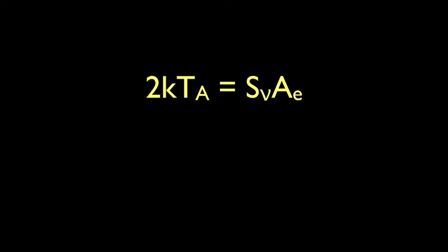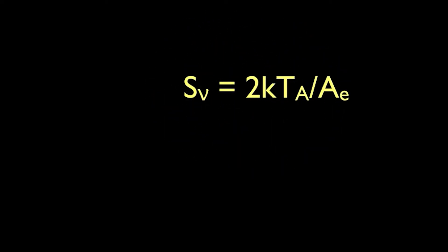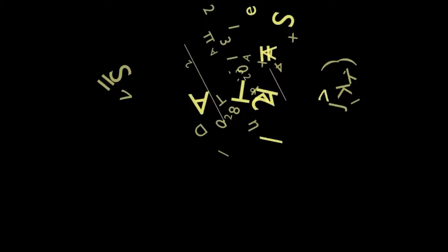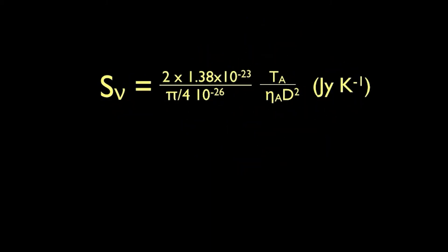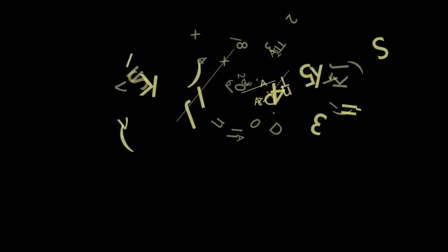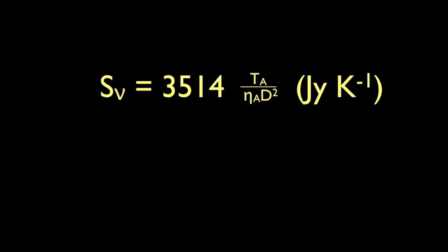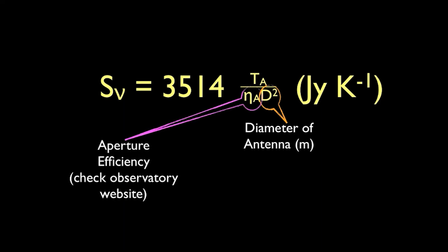You should be able to find out the aperture efficiency from documentation for the single-dish telescope in question. Armed with this approximation, we're now ready to convert our integrated intensity into a flux density. Plugging in the appropriate values and constants, the conversion factor simplifies to this, where d is the diameter of the single-dish telescope in meters, and eta sub a is the aperture efficiency.